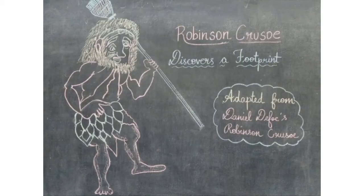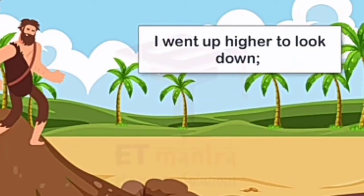Robinson Crusoe was going towards the boat. He saw a big footprint on the sand, and he was very surprised to see it.